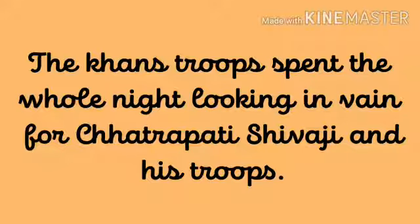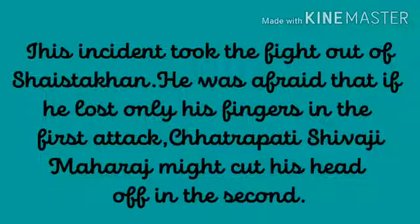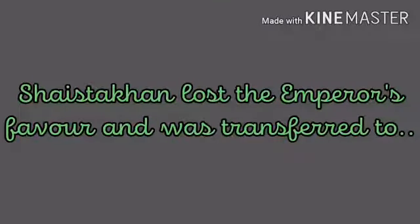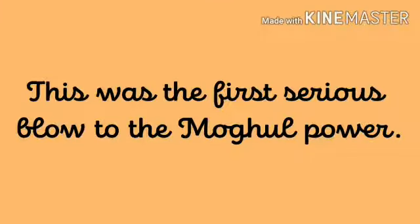Chhatrapati Shivaji Maharaj and his men raised the cry 'Chhatrapati Shivaji Maharaj has attacked — run, catch him!' and started to run themselves. The Khan's troops also started running in all directions. In the confusion that followed, Chhatrapati Shivaji Maharaj and his men made their escape and reached Sinhagad. The Khan's troops spent the whole night looking in vain. Shahist Khan was afraid that if he lost only his fingers in the first attack, Chhatrapati Shivaji Maharaj might cut off his head in a second. Aurangzeb was furious and transferred Shahist Khan to West Bengal. This was the first serious blow to Mughal power — Chhatrapati Shivaji Maharaj had successfully bearded the lion in his own den.